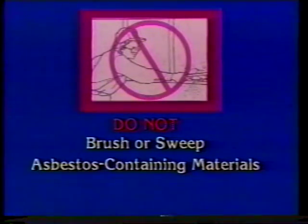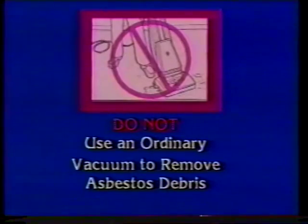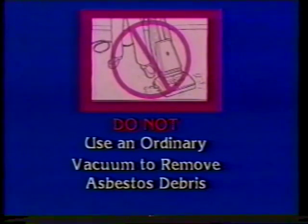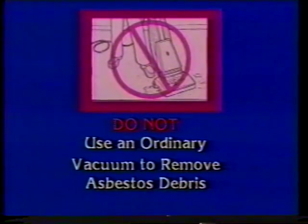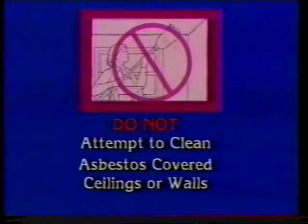Because improper cleaning can stir up asbestos fibers, certain procedures must be used when cleaning areas that contain asbestos materials. A damp cloth should be used to dust surfaces, not a brush. A wet mop should be used to clean floors, not a broom. In an area which contains asbestos materials, do not use an ordinary vacuum to clean up asbestos debris. A special vacuum equipped with a high efficiency particulate air filter should be used to capture the tiny fibers which would pass through an ordinary vacuum. Ceilings or walls covered with asbestos materials cannot be cleaned — do not attempt to brush or sweep them.